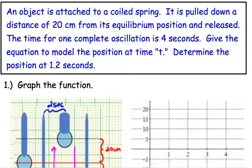It is pulled down to a distance of 20 centimeters from its equilibrium, so the zero, and then it's released. The time for one complete oscillation, oscillation like revolution, is 4 seconds.